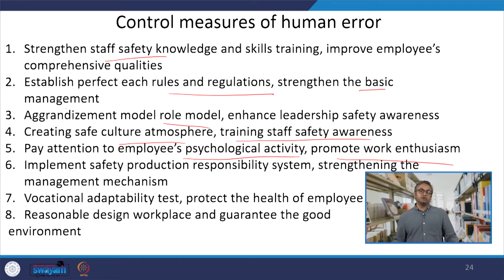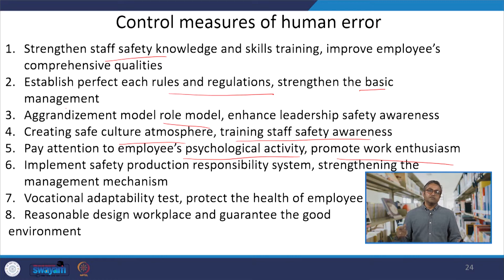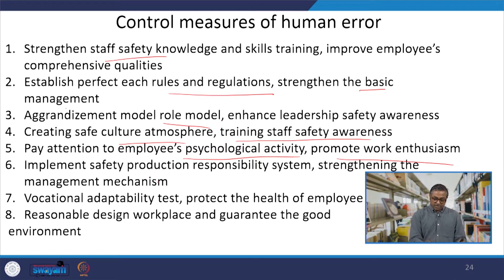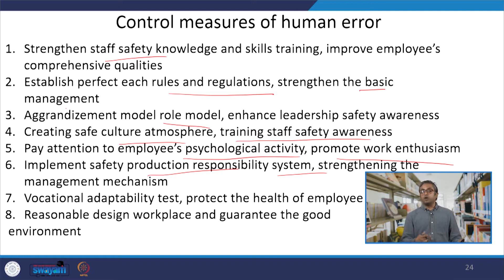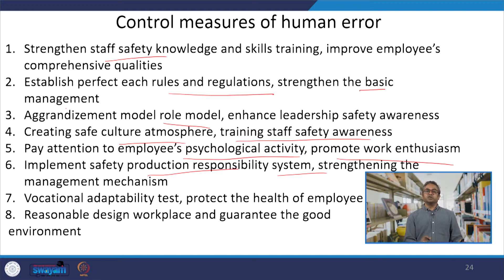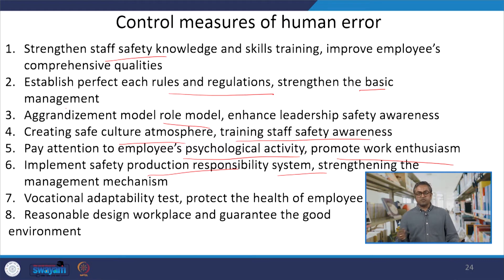In the discipline of ergonomics, when the psychological activity of an employee is challenged — when their psychological process and work enthusiasm are challenged — the chances of human error escalate. Implementation of a safety production responsibility system — dividing responsibility and providing each individual with clearly defined tasks — ensures a safe environment, dependence on others, and distributed cognition. All these things promote a stronger workplace setting and ensure control measures that help avoid human error.